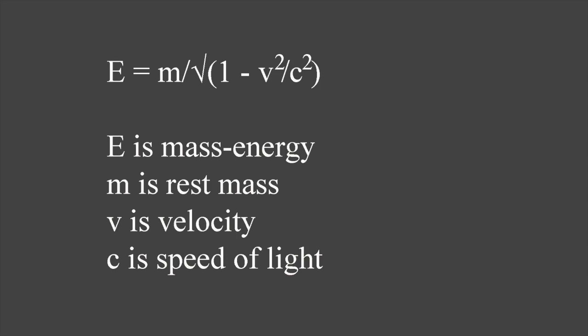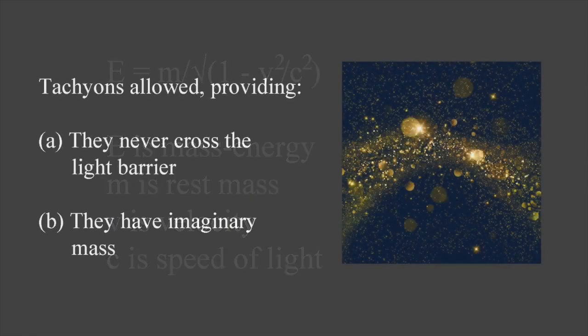What about a particle for which v is always greater than c? In this case, v squared over c squared is greater than one, so the denominator in the equation is an imaginary number — the square root of a negative real number. If m has a real value, then E is imaginary, which is hard for physicists to accept since E is a measurable quantity. If m takes an imaginary value, however, then because one imaginary number divided by another is real, E is real. Tachyons are therefore allowed, providing: (a) they never cross the light barrier, and (b) they have an imaginary rest mass — which is physically more acceptable since the rest mass of an object that never stops isn't directly measurable.